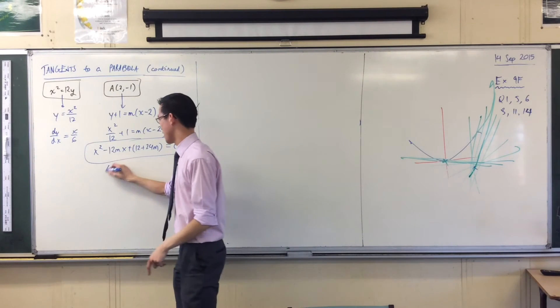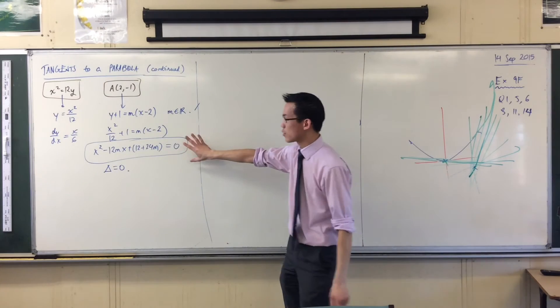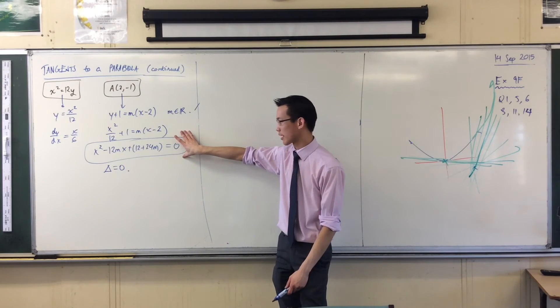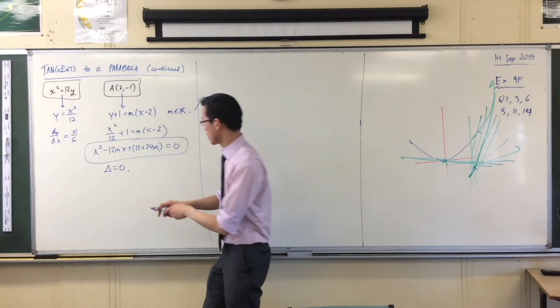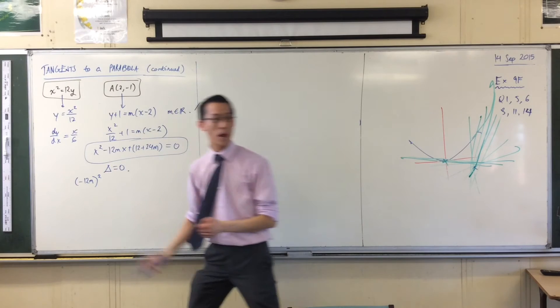How do you get only one solution on a discriminant? Yeah? B squared minus 4AC is equal to 0. Fantastic. Once the discriminant is 0, this thing will only have one solution. Okay? So there's my B in there.